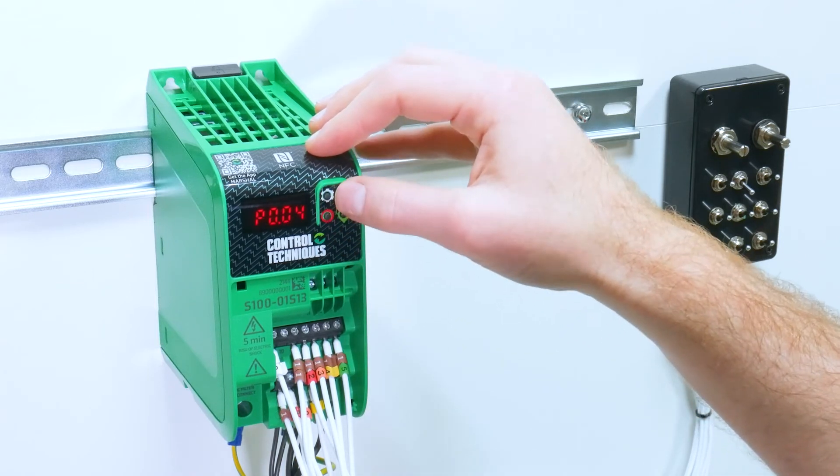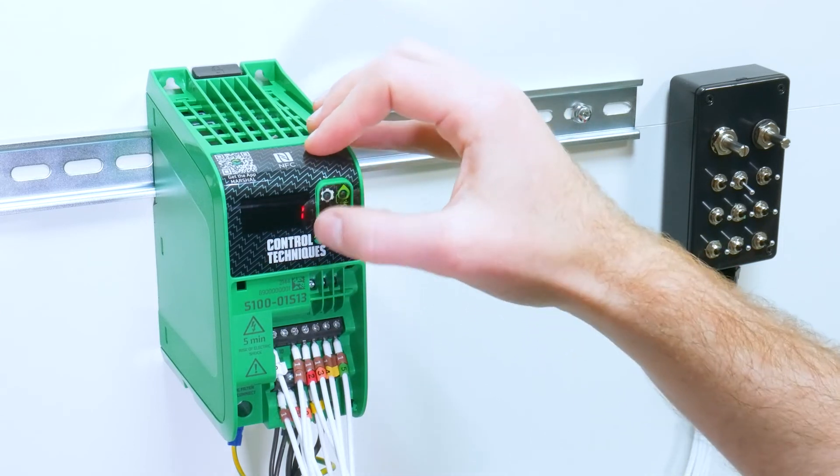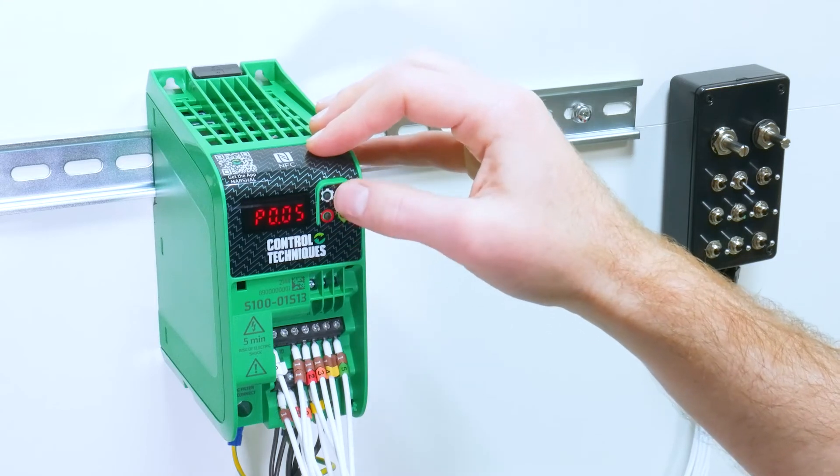Parameter five is our reference configuration. A setting of one means a local remote configuration where you have an analog input one and analog input two signal.